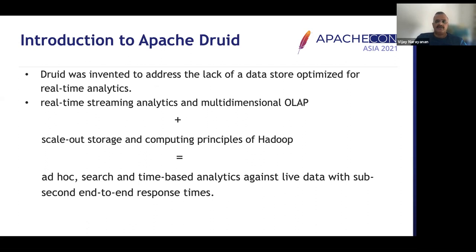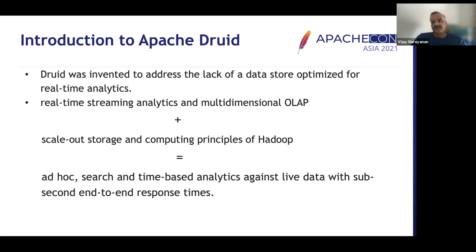Druid was invented to address a very specific problem: there was no optimized real-time data store for analyzing data in real-time and analyzing data that is very fresh. Druid combines a number of different concepts and technologies — real-time streaming analytics, multi-dimensional overlap, combined with the scale-out storage and computing principles of Hadoop, a shared-nothing distributed architecture, and the ability to scale based on the size of the data and the number of queries.